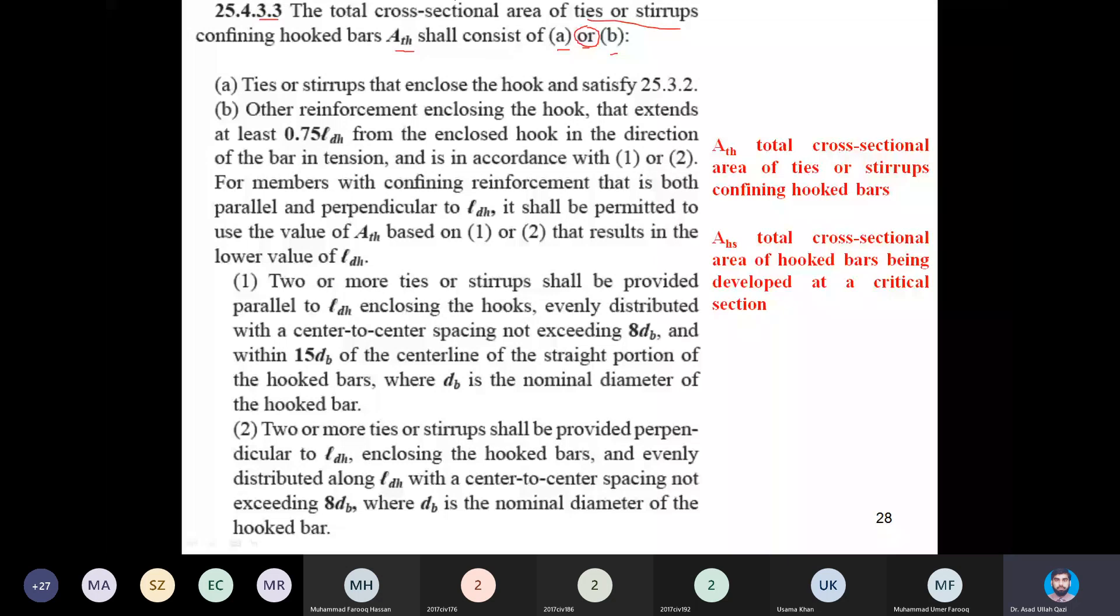First, what is A? Ties or stirrups that enclose the hook and satisfy 25.3.2. This 25.3.2 is given on the next slides. I will discuss this in class, but at the moment we can mechanically calculate how many ties, their area or stirrups, that are enclosing the hook and that hook is satisfying this 25.3.2. It is actually the standard hook requirement which I will explain on the next slides. First thing is that you need to mechanically calculate the confinement.